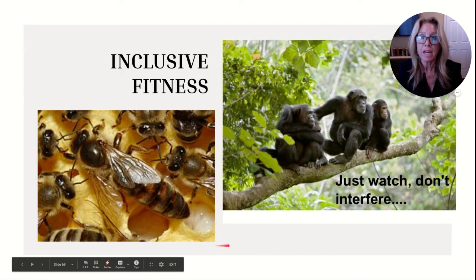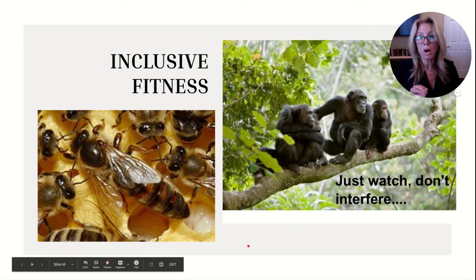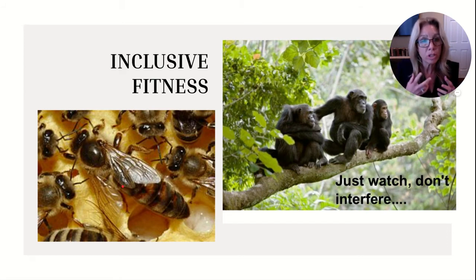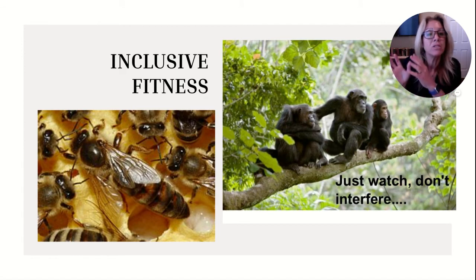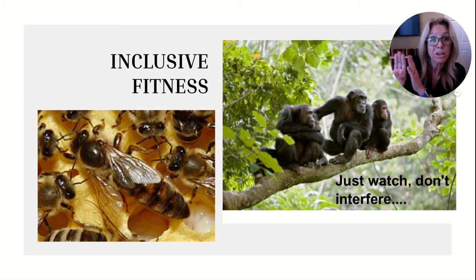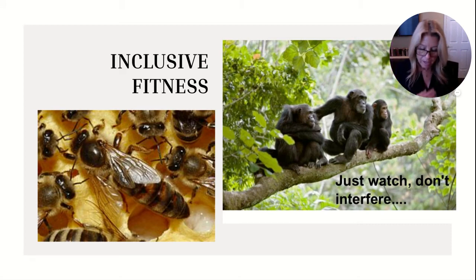Inclusive fitness: genes can be passed on in two ways. Direct — parent to offspring, reproductive success of the individual. Indirect — a relative that reproduces; this is called kin selection. For example, social animals like bees, wasps, and ants: the queen is the only diploid individual; the males are haploid. They share so many genes that they increase their fitness by fighting to protect the queen, making it more likely their genes are passed on.